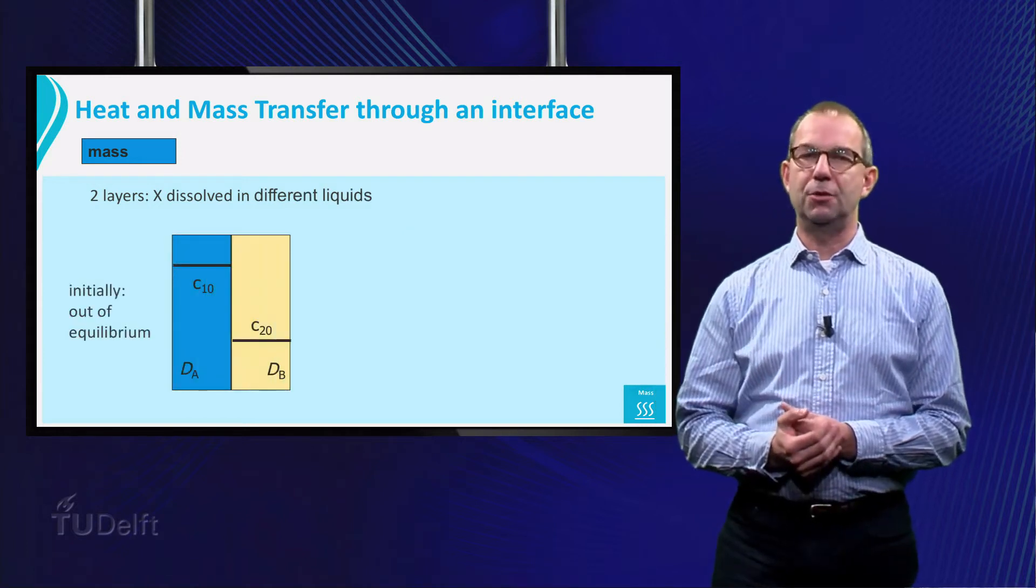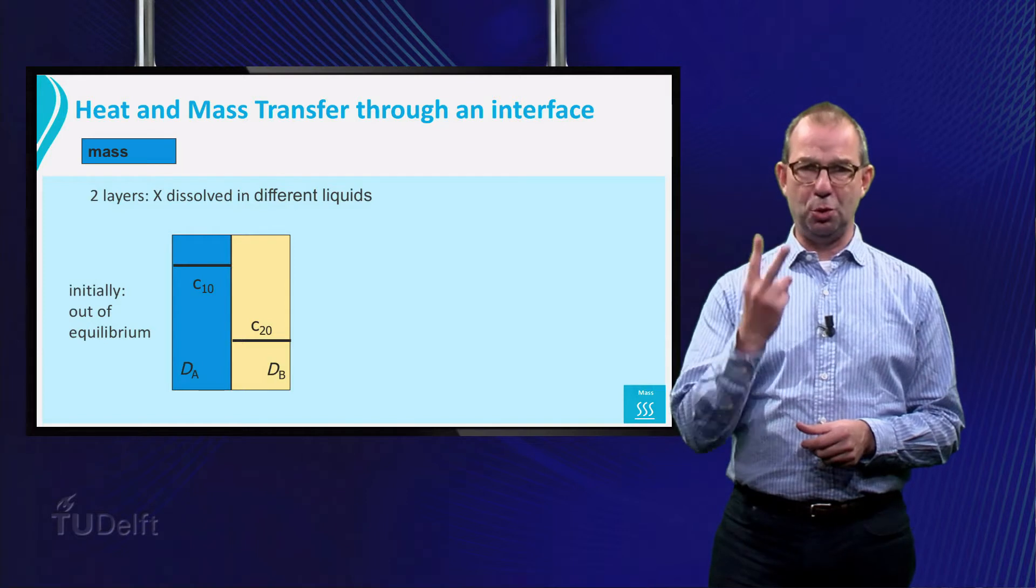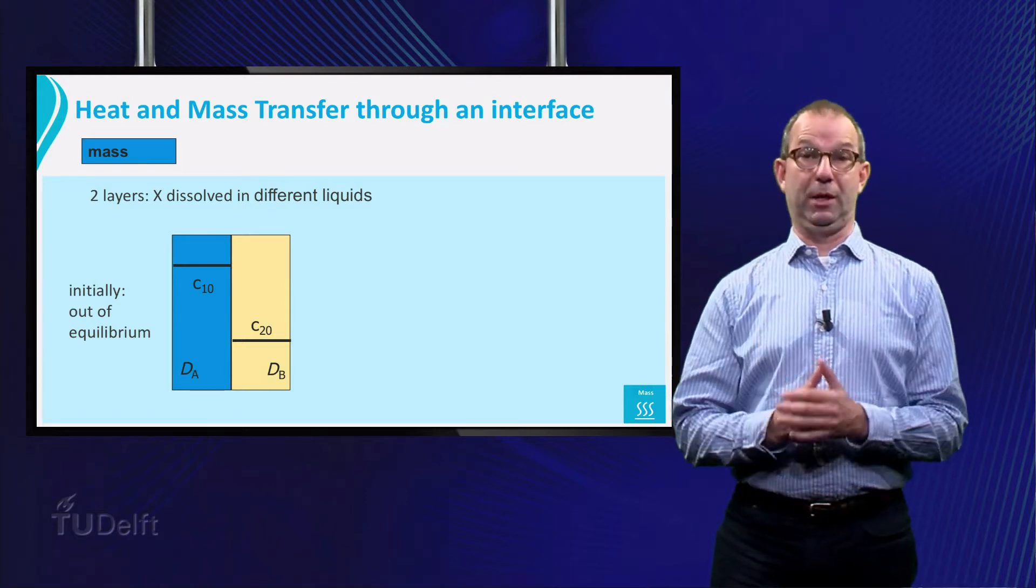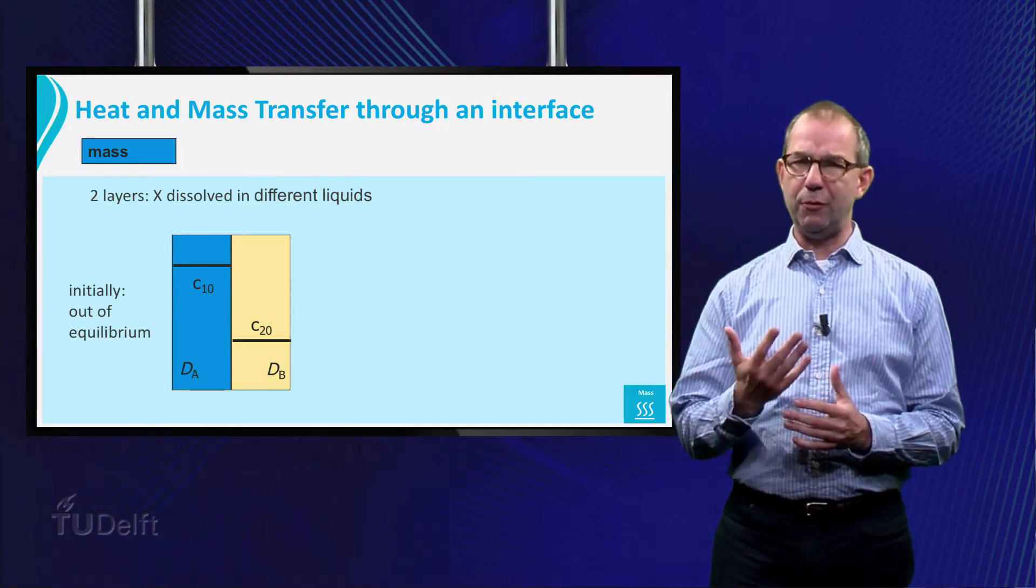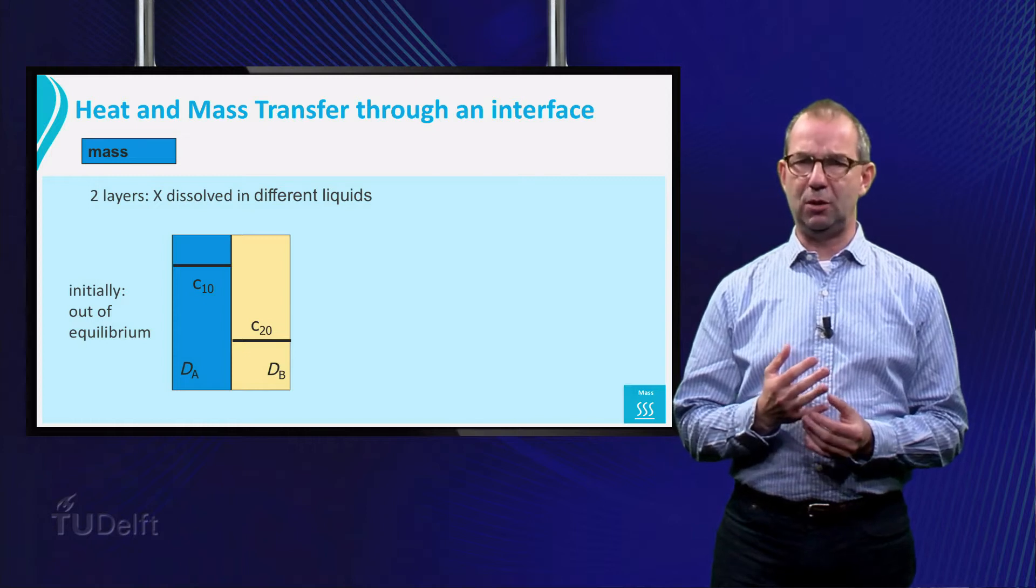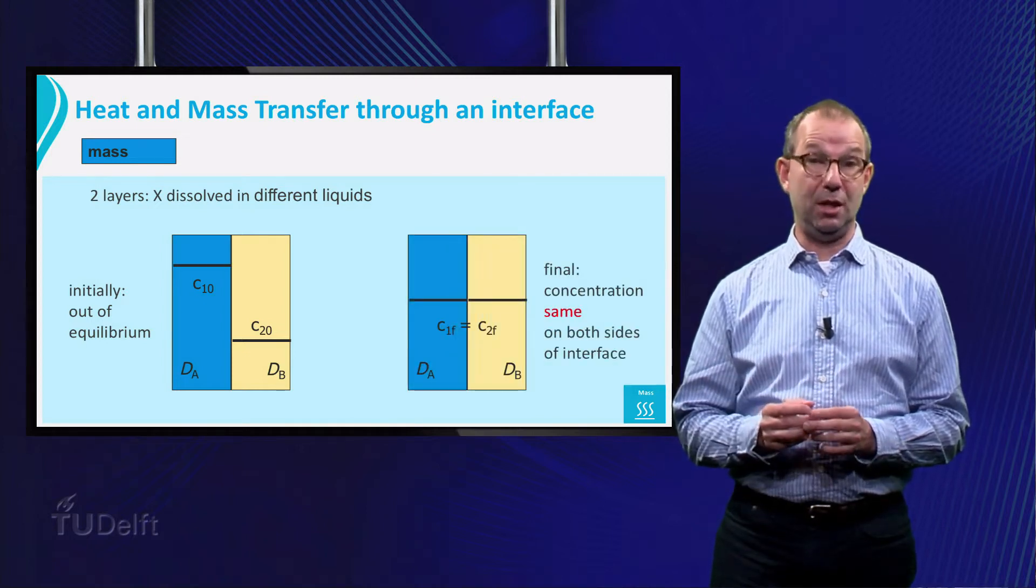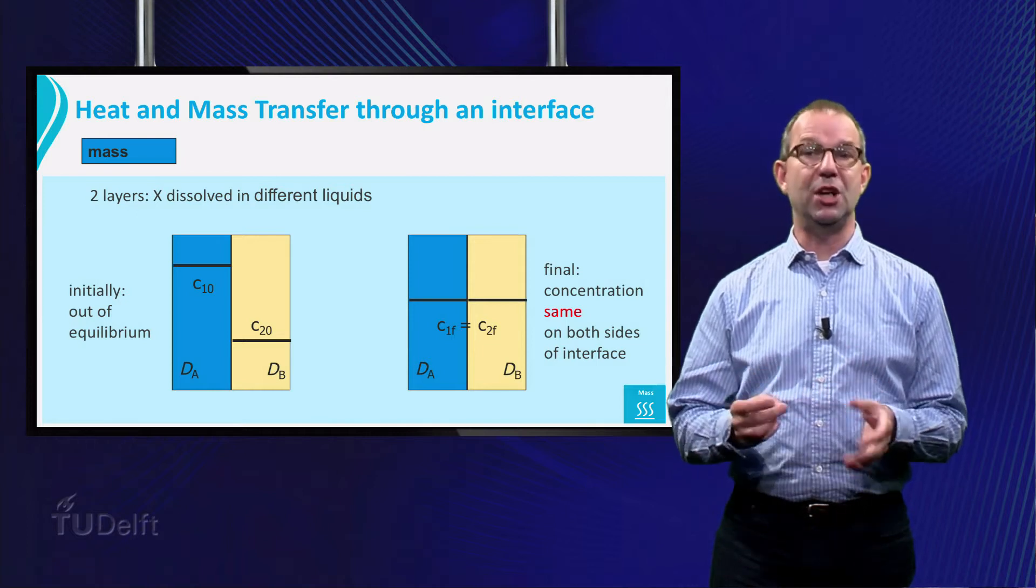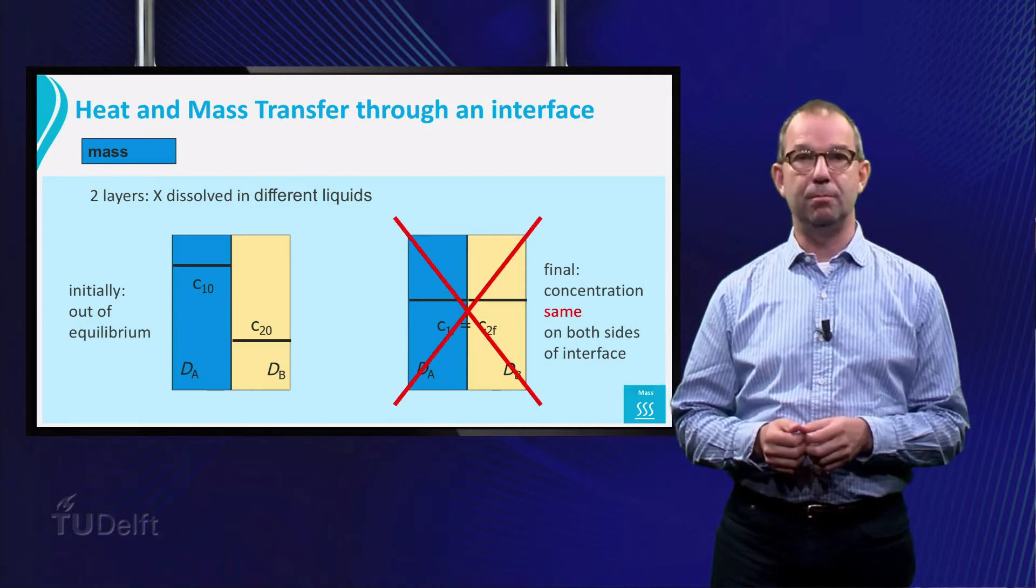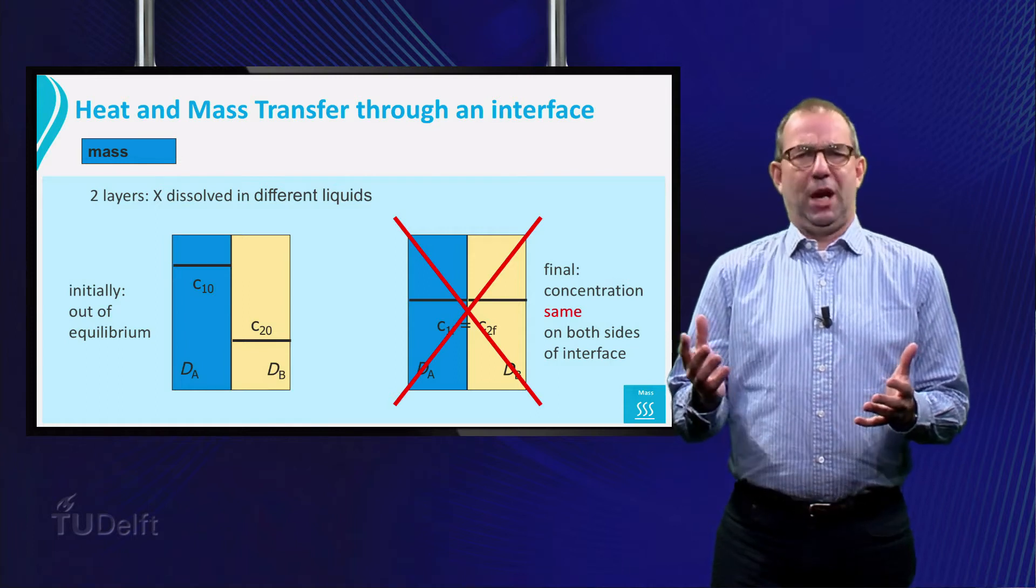So far so good. Now we turn to X dissolved in two layers of different liquids. Now if we wait, the situation will go to equilibrium. But the concentration in both layers will in general not be the same. Otherwise I wouldn't give this lecture, would I?